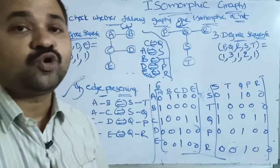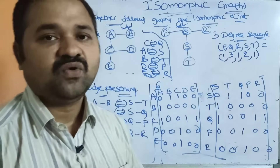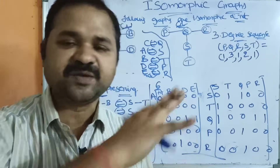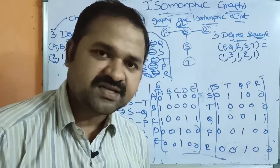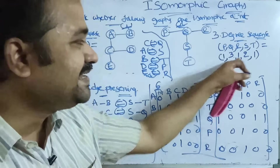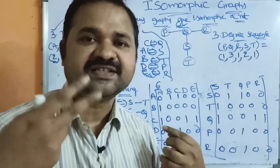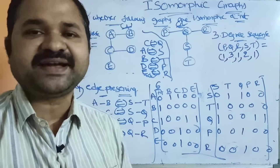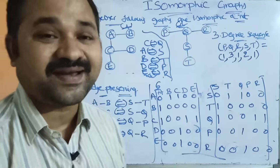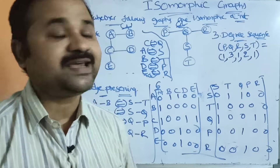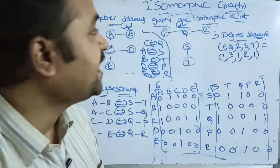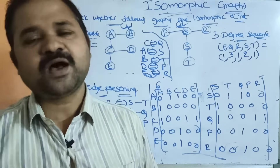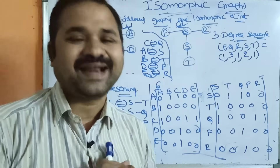So we can conclude that these two graphs are isomorphic because all six conditions are satisfied: number of vertices, number of edges, degree sequence, one-to-one correspondence, edge preserving, and adjacency matrix are all the same. In the next video we will discuss one more example on isomorphic graphs.